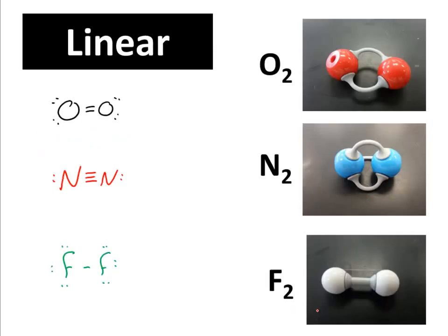The last molecules we'll look at today involve linear shapes. Any time you have two elements — like O₂, N₂, F₂, etc. — the only possible shape is a straight line, which is linear. They are 180 degrees apart from each other. There is no way to escape this; there's only one possible shape. This has been a quick guide to molecular shapes, based on the fact that electrons repel each other and give predictable molecular shapes according to the VSEPR theory. Hope it was helpful — have a great day!